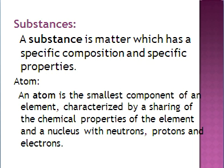Then we have the topic: Atom. An atom is the smallest component of an element. Atom kisi bhi element ka sab se chhota component hota hai, characterized by a sharing of the chemical properties of the element. And it has a nucleus, jis mein neutrons, protons, and electrons paaye jate hai. An atom is the defining structure of an element — yani kisi bhi element ka jo defining structure hota hai woh atom hota hai. And the atom cannot be broken by any chemical means — yeh atom kisi bhi chemical method se toda nahi ja sakta.